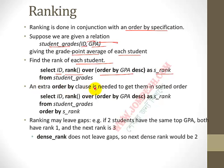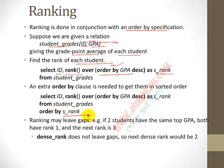An extra ORDER BY clause at the outer level is needed to get results in sorted order: select ID, rank() over (order by GPA) as s_rank from student_grade order by s_rank. Ranking leaves a gap: if two students share the top GPA, both receive rank 1, and the next rank assigned is 3.